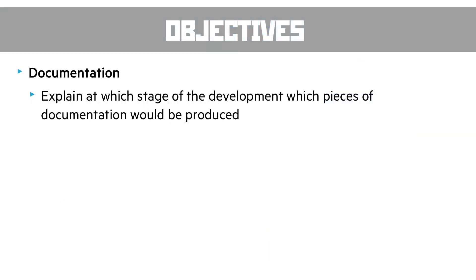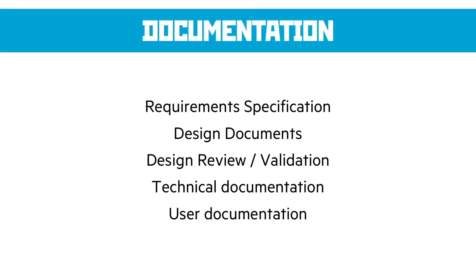The next objective is to understand documentation and explain at which stage of development each piece is produced. The key documents include: a requirements specification — a list of everything the project needs to do to be considered a success; design documents such as flowcharts, pseudocode, and entity-relationship diagrams that explain how the system must work; and then a review or validation of that design to check if it's effective. There's also technical documentation written for future developers explaining how the software works on a technical level.